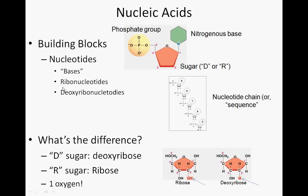Nucleotides come in two different flavors: ribonucleotides and deoxyribonucleotides. The difference between them has to do with the sugar molecule. Deoxyribonucleotides are made of a sugar called deoxyribose, while ribonucleotides use ribose. The difference is at carbon number two: deoxyribose has a hydrogen, ribose has a hydroxyl group. Hydroxyls are very, very reactive; hydrogens are very, very inert. So ribonucleotides are more reactive than deoxyribonucleotides.